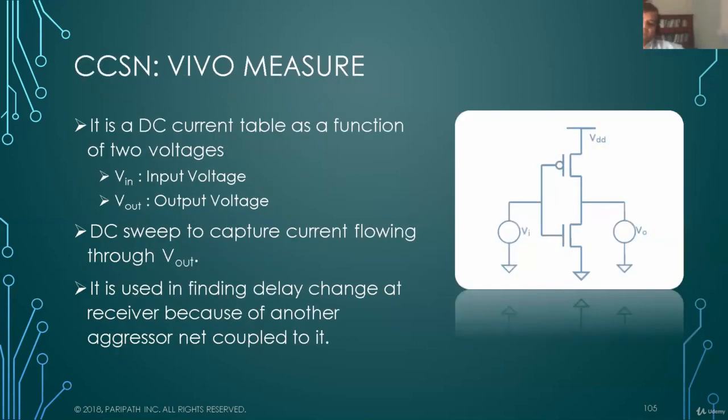So VIVO measure, voltage in voltage output. And this is a DC sweep to capture the current flowing through Vout. So the setup of this VIVO is very simple. You have a CCB that the software has already partitioned for a pin or an arc. You apply the voltage source at the input and you also apply the voltage source at the output. And you sweep through VIN and Vout. Now for every change in VIN and Vout, you record what is the current, the DC current flowing through Vout. And that's your VIVO model.